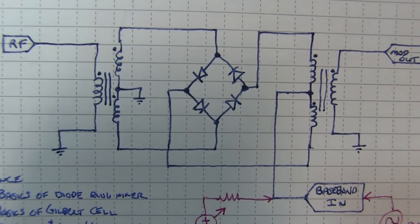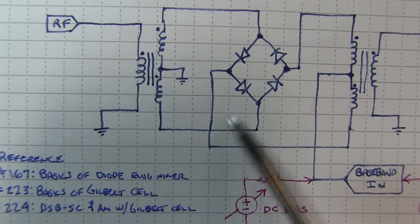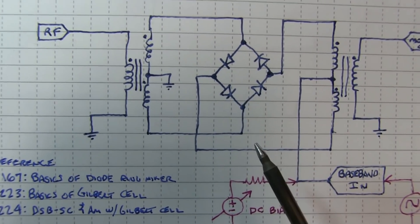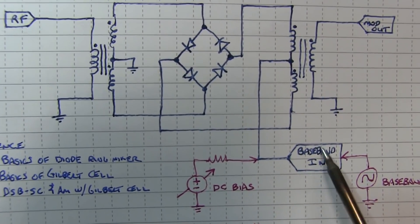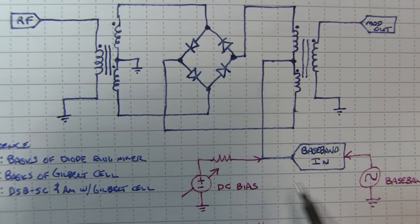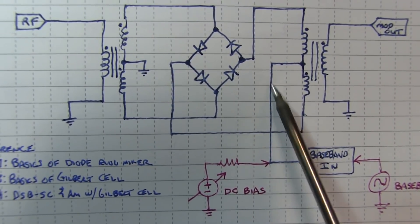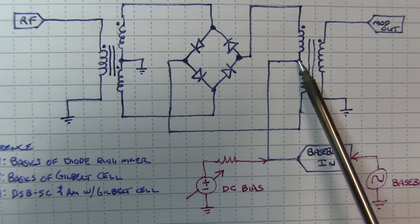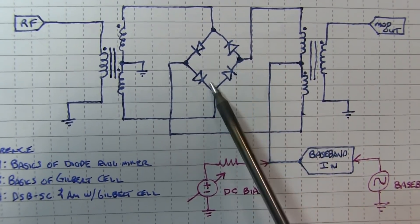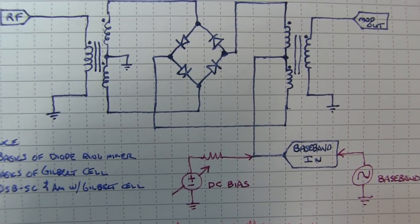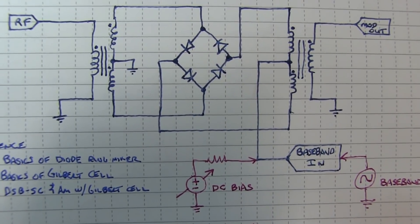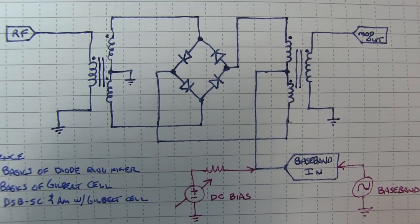And really the key in getting, being able to do AM or double sideband suppressed carrier, is carefully controlling primarily the baseband input voltage level and the DC bias on that port. Now this is the port, by applying a DC bias, we're going to essentially pre-bias diodes in one way or the other. And that's really going to be the key to generating AM as opposed to double sideband suppressed carrier.